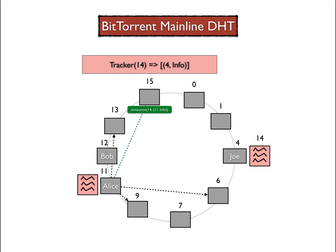Node 15 then adds Alice to the tracking information, and from now on others will be able to connect to Alice instead of Joe to obtain the red file. To keep its table of neighboring nodes size manageable, Alice will eventually remove some of the temporary nodes she learned of, such as node 15.